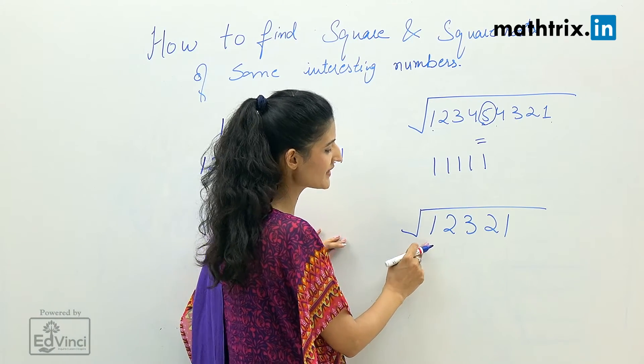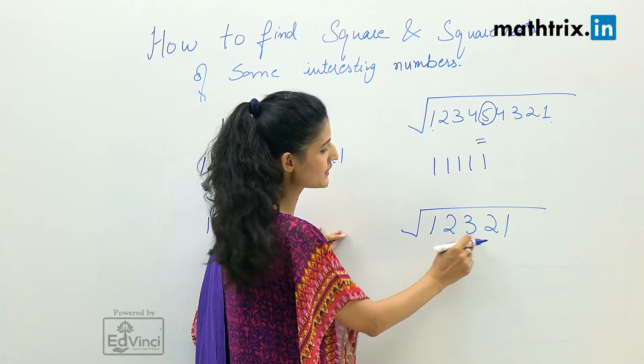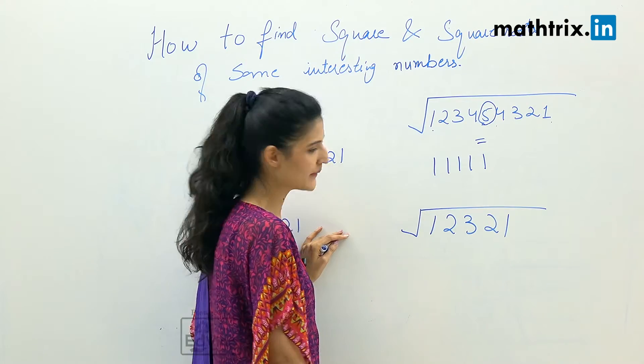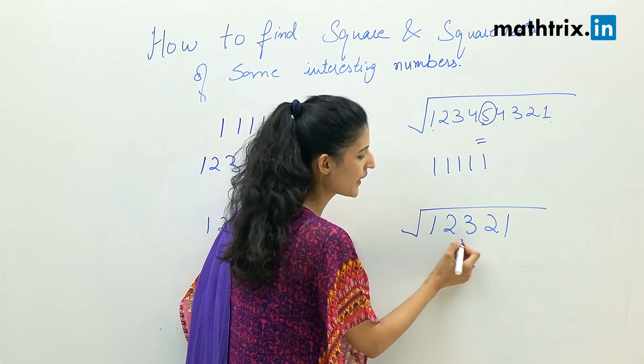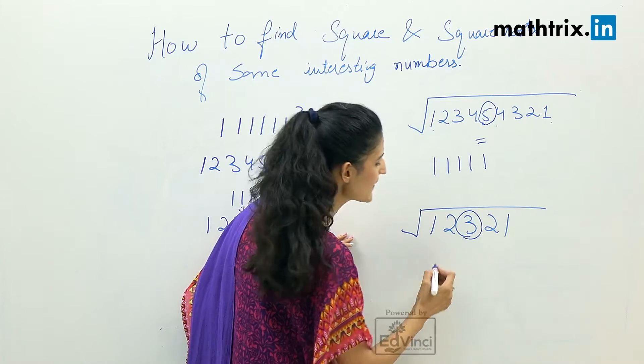Now let's take another example. We have to find the square root of 12321. It's again the same example. We are starting with one, we are going till three, and then we start descending.